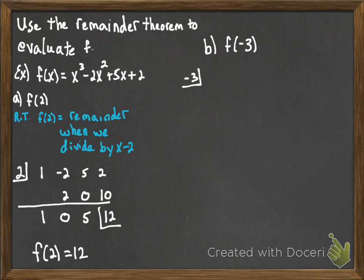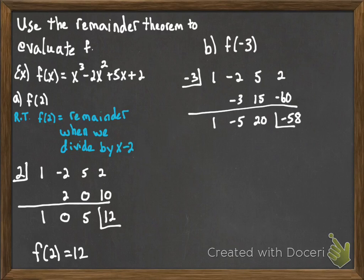So we bring in our -3. Again, write down our terms. The 1 comes down. -3 and 1 is -3. -2 + (-3) is -5. -3 and -5 is 15. 5 + 15 is 20. -3 times 20 is -60. 2 + (-60) is -58. You may want to check on your calculator to confirm this is the right answer. f(-3) is -58.